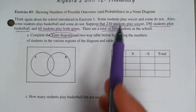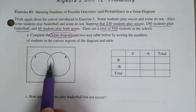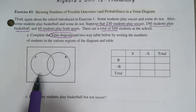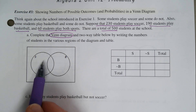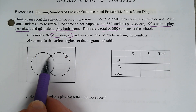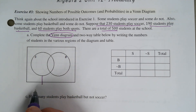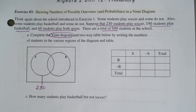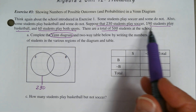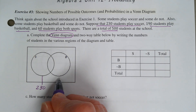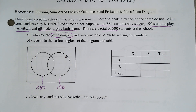There are 230 students that play soccer, so all of circle S would have 230 students. Circle S is split into a non-overlapping piece and the overlap with circle B, so we draw a lollipop stick down indicating that all of circle S totals 230. Similarly, 190 students play basketball for all of circle B, and 60 students play both sports — that is the overlap portion. Now for the two-way table.